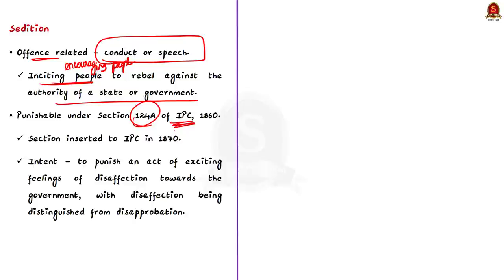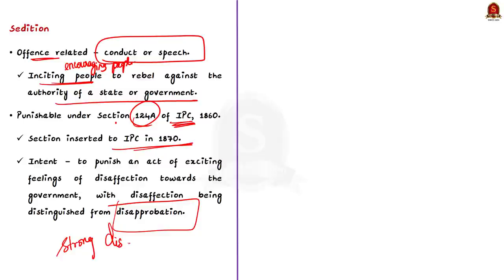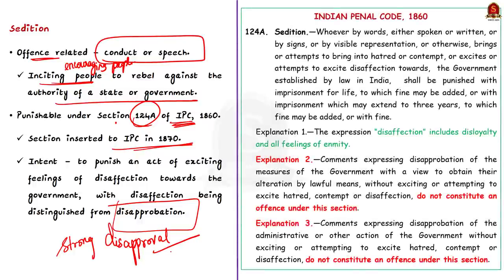The original IPC 1860 did not have a provision for sedition; it was inserted only in 1870 to punish acts of exciting feelings of disaffection towards the government. However, disaffection had to be distinguished from disapprobation — meaning strong disapproval. This differentiation was necessary to allow people to voice feelings against the government, as long as they projected a will to obey the government's lawful authority. As per Section 124A, anything that brings hatred or contempt towards, or excites disaffection towards, the government constitutes sedition.